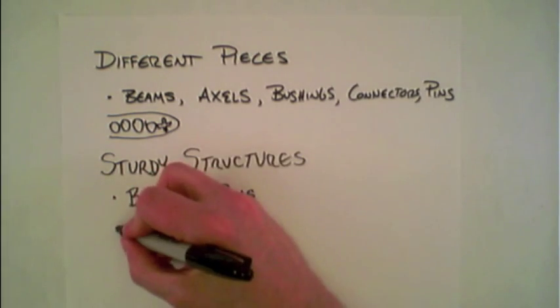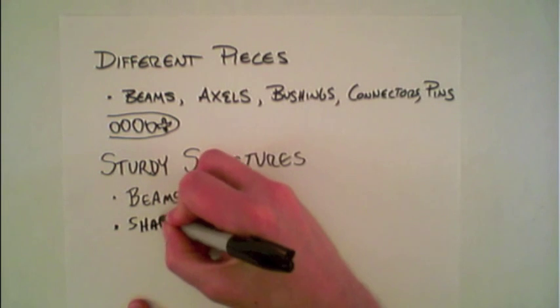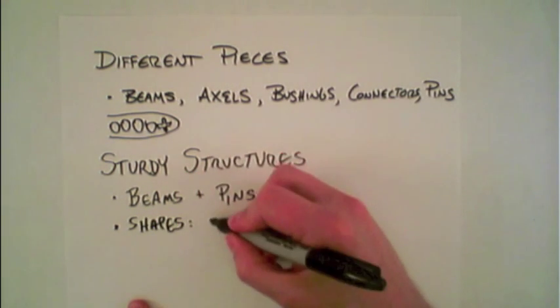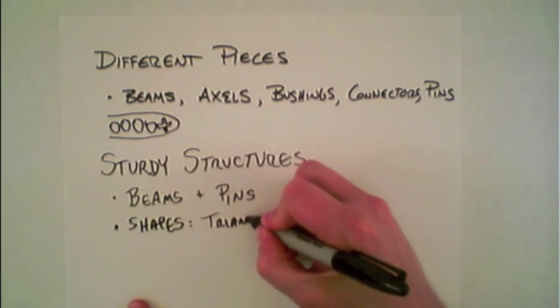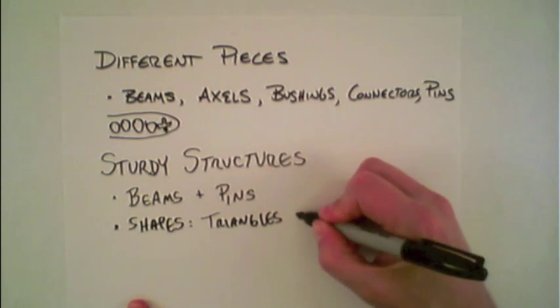Second, we'll talk about different types of shapes, specifically triangles and squares.